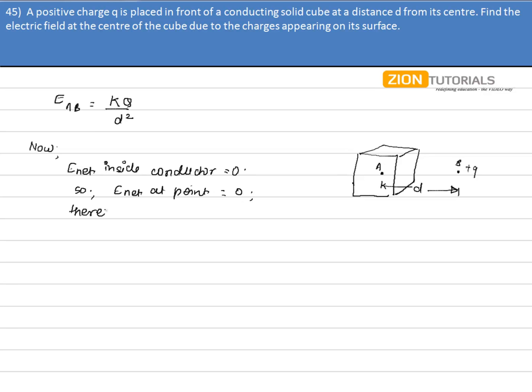Therefore, the charge that will appear on the surface of the cube will produce the same electric field as is produced by the plus Q charge that is kept outside the cube. So the electric field will be equal to KQ divided by D squared, and that is my answer.